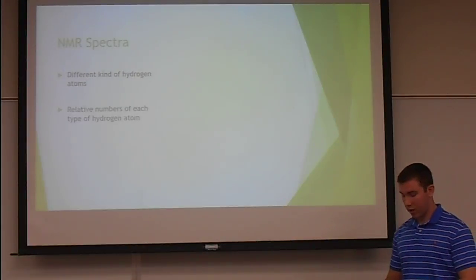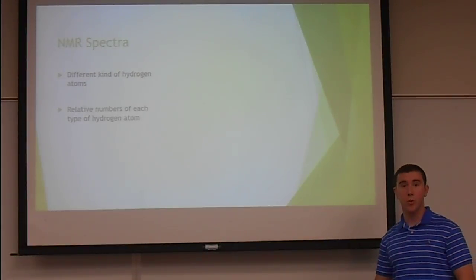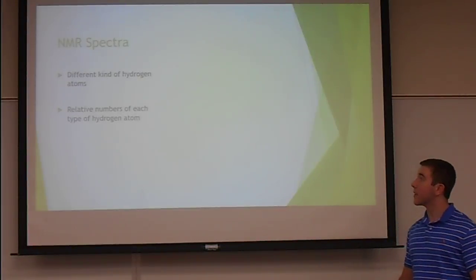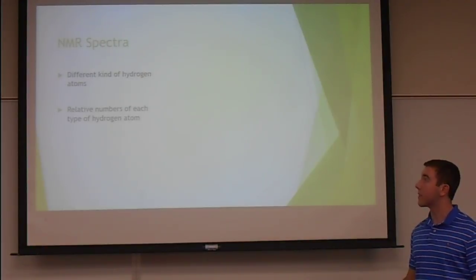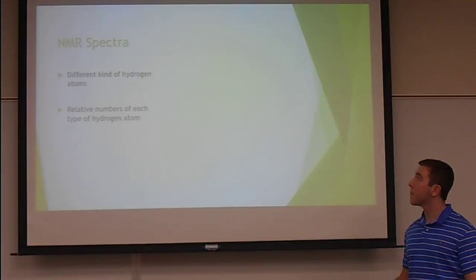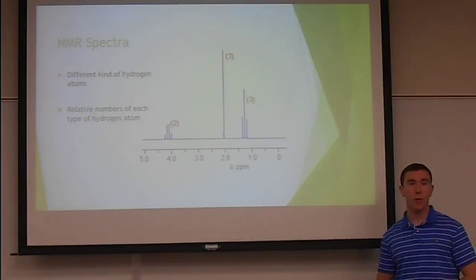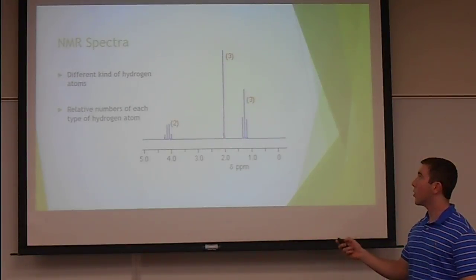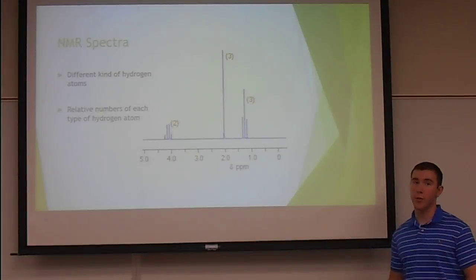The obtained spectra allows us to find the number of peaks and ratio of areas. This is important because the number of each peak is proportional to the number of hydrogens of that type. Here's an example of NMR spectra — you can easily see three peaks with a 2 to 3 to 3 ratio.